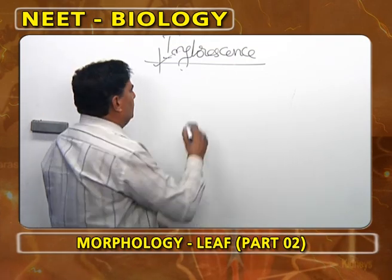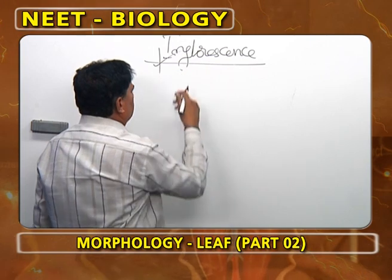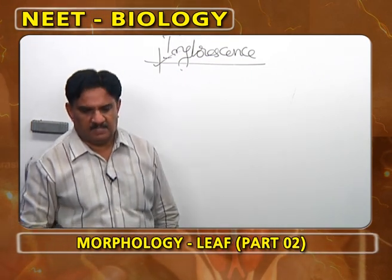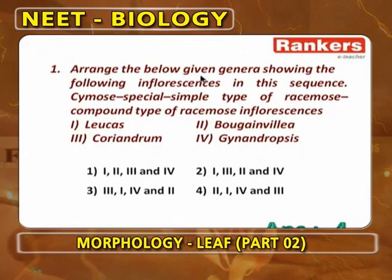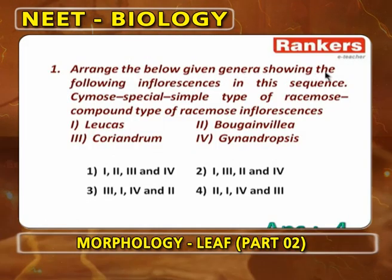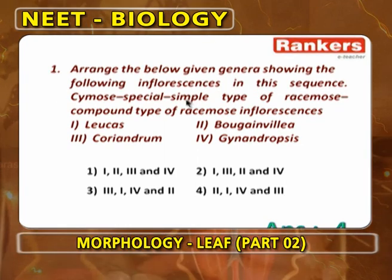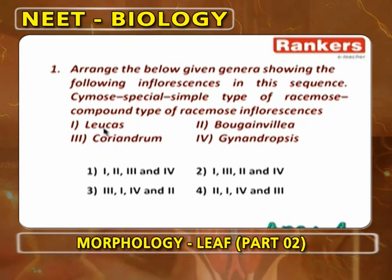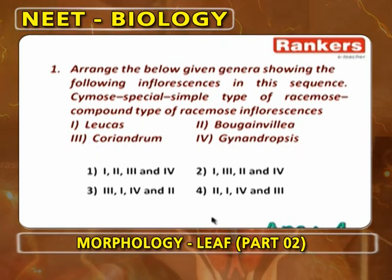Now we discuss some important questions in inflorescence. First question: arrange the following genera showing the given inflorescence in sequence — cymose inflorescence, special inflorescence, simple type of racimose inflorescence, compound type of racimose inflorescence. The genera are Leucas, Bougainvillea, Coriandrum, Gynandropsis. The answer is 2, 1, 4, 3.